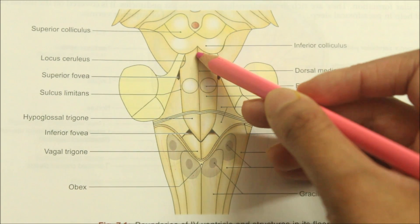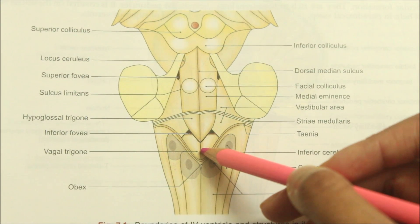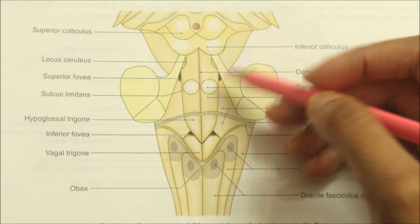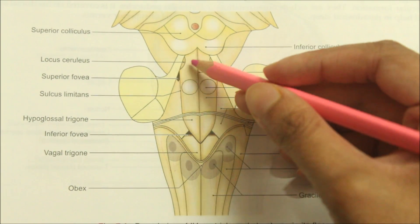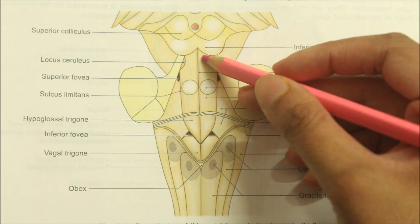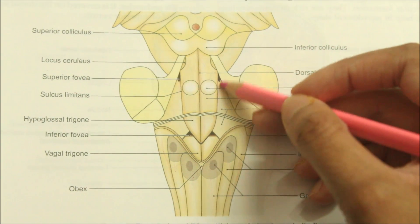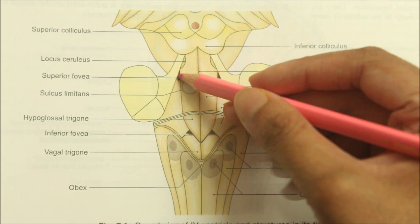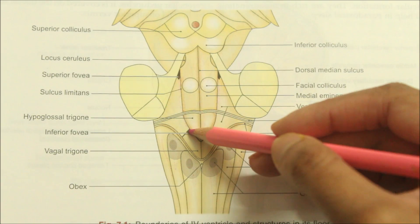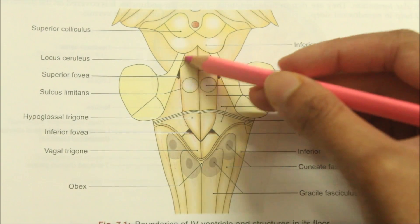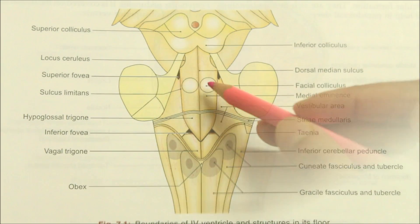Looking at the features of the floor: the dorsal median sulcus divides the floor into two symmetrical halves. The sulcus limitans divides each half into a median eminence and a lateral vestibular area. The sulcus limitans presents a depression at the cranial end called the superior fovea, and towards the caudal part called the inferior fovea. The medial eminence is wider above and narrower below.